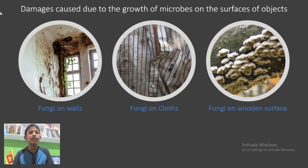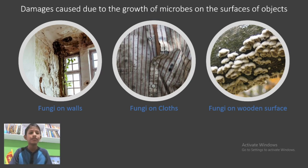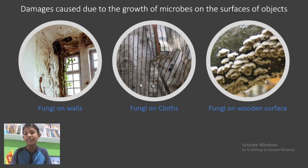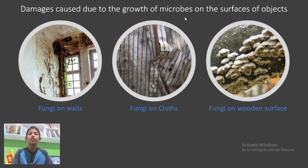The third main disadvantage from microbes is damage caused by the growth of microbes on the surfaces of objects. The first is fungi on walls — if you don't maintain the walls, fungi will grow rapidly. The second is fungi on clothes — you can see some spots which are not very pretty. The third is fungi on wooden surfaces, like mushrooms, which like to grow on wood. Microorganisms can get anywhere; they rapidly reproduce and spread everywhere.